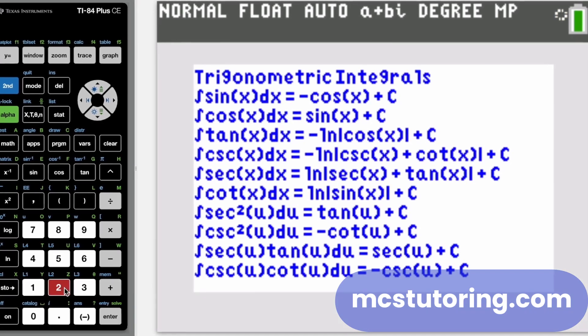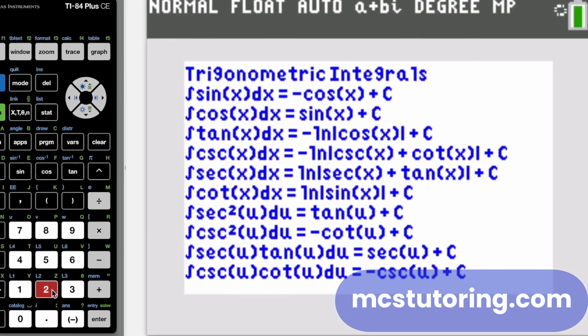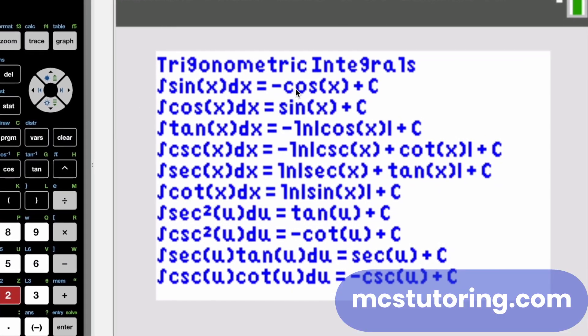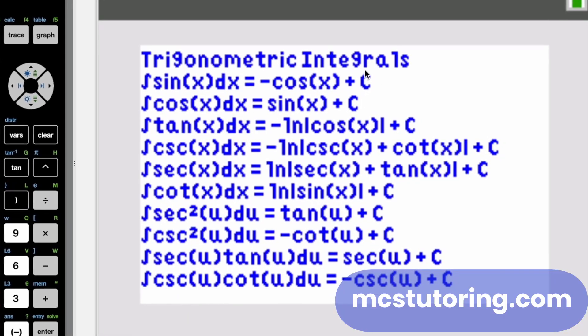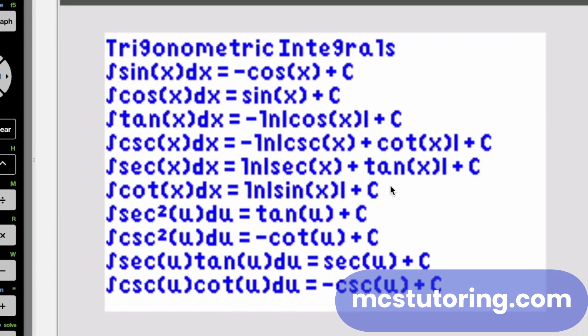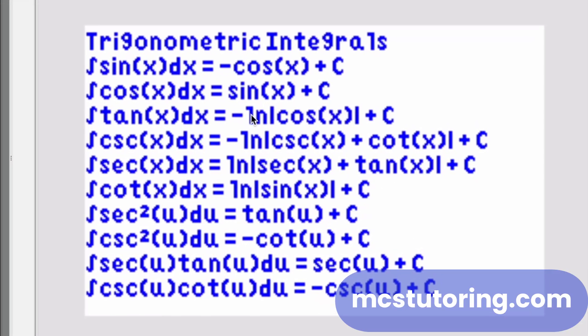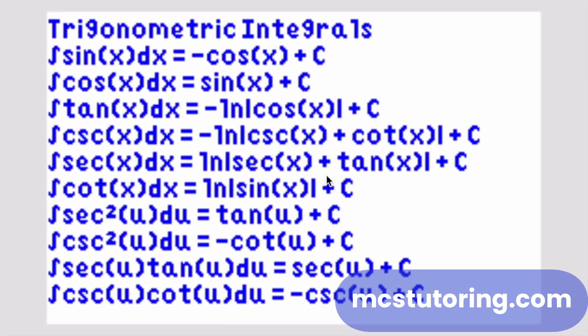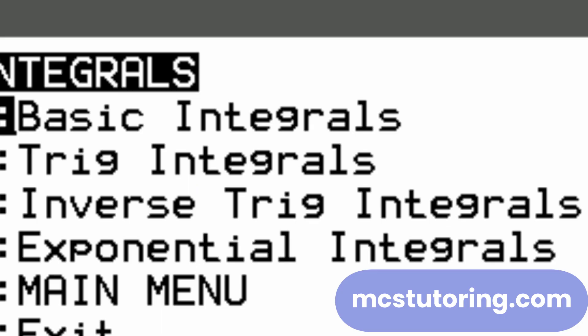Now we've got trig integrals. We got them all. We got them all, baby. So we've got, you know, integral of sine X DX is negative cosine X plus C. Just remember to keep putting this plus C. I got burned because I was not paying attention to details when I was your age. So I don't want to wag my finger. I'm just telling you I made that mistake. So it's a good thing we have it here.